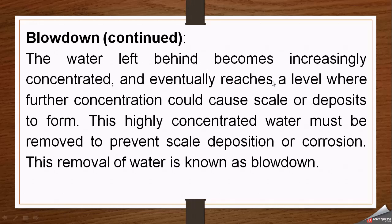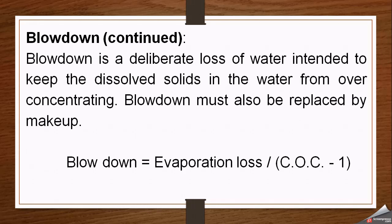The recirculating water becomes increasingly concentrated as dissolved solids increase while water quantity decreases. Eventually a point comes when further increase in concentration could cause scale or deposits to form in the system. This highly concentrated water must be removed to prevent scale deposition or corrosion. The removal of this concentrated water is known as blowdown — a deliberate loss of water intended to keep dissolved solids from becoming over-concentrated. Blowdown can be calculated as: blowdown = evaporation losses divided by (cycles of concentration minus one).